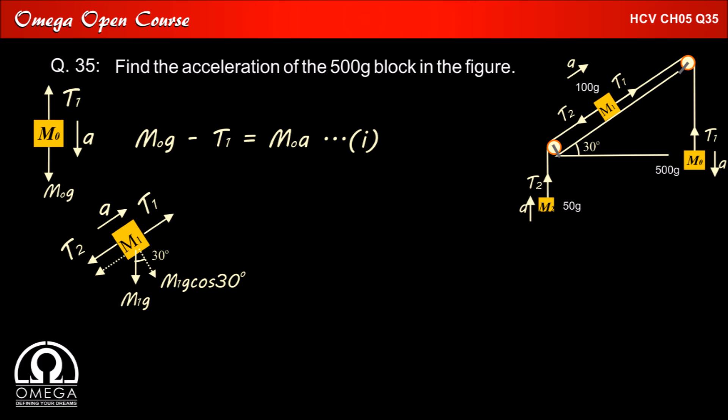Therefore, the component of gravitational force perpendicular to the incline is M1g cos 30° and along the incline is M1g sin 30°. Writing the equation of motion along the incline, we get T1 - T2 - M1g sin 30° = M1a.